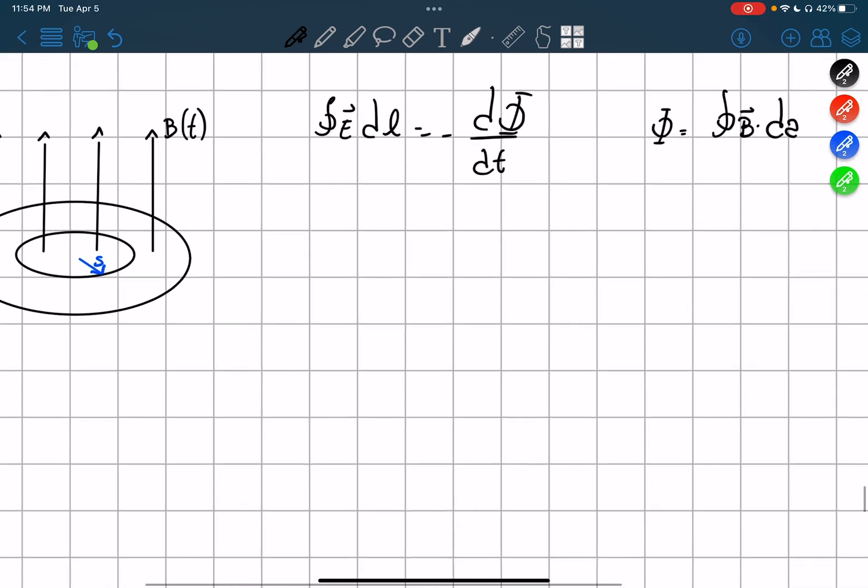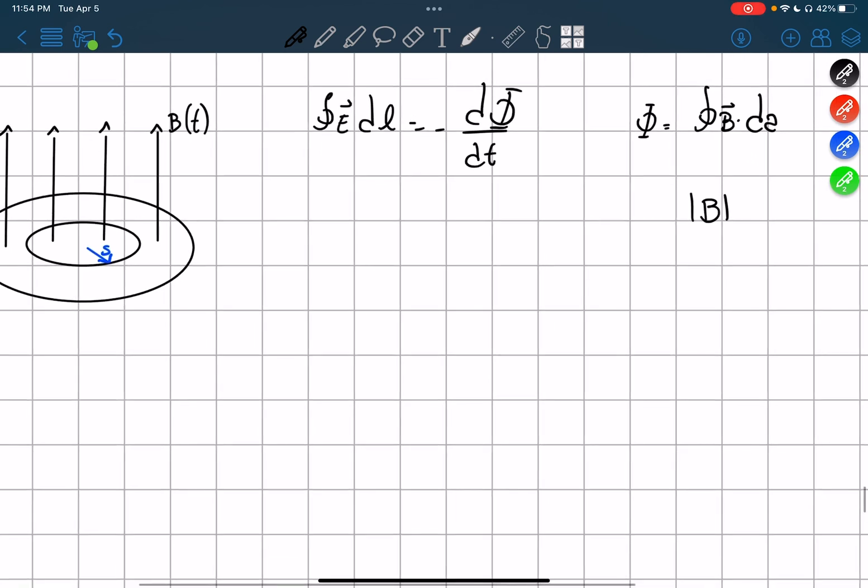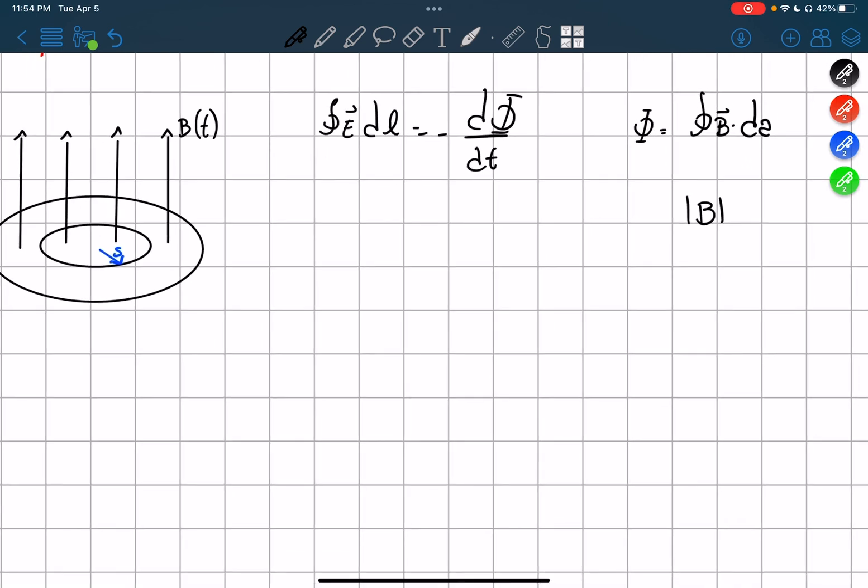In this case it will equal B. I'm going to use the absolute value so I don't have to put the direction right now. And the area would be pi s squared.